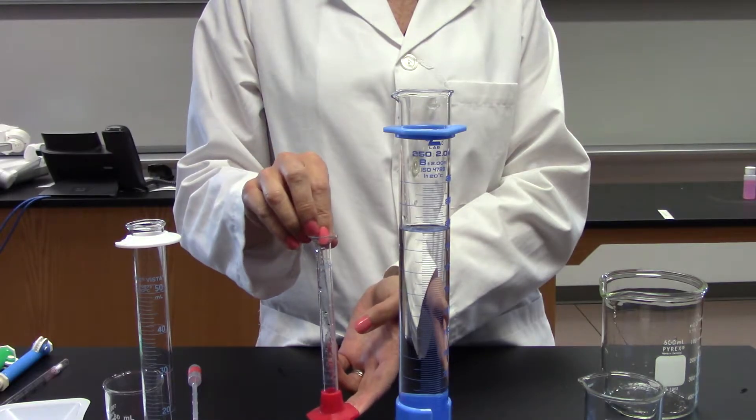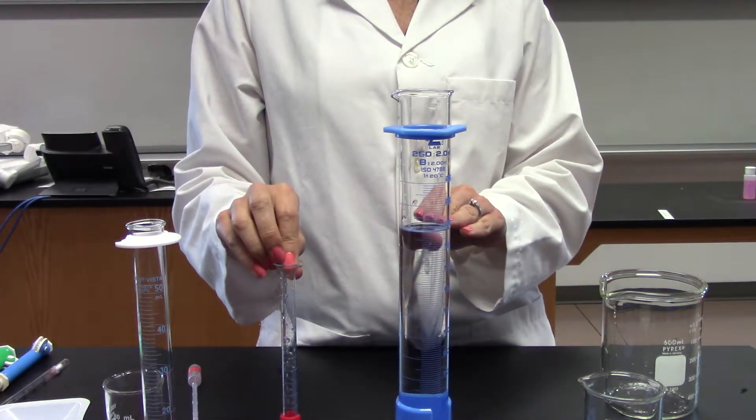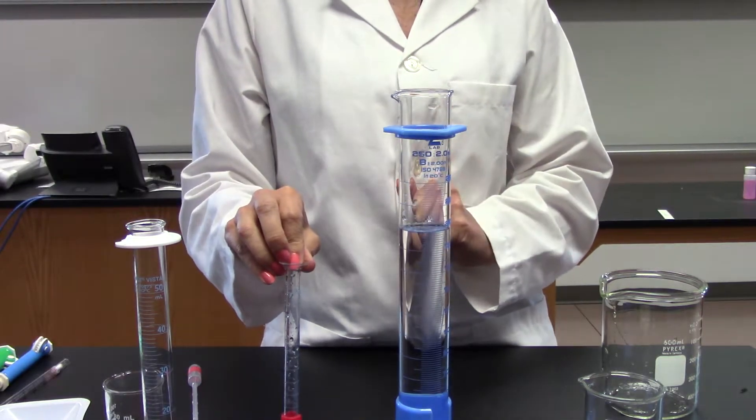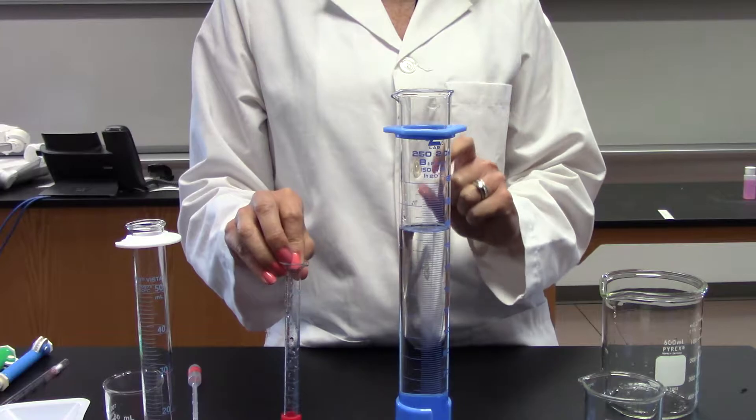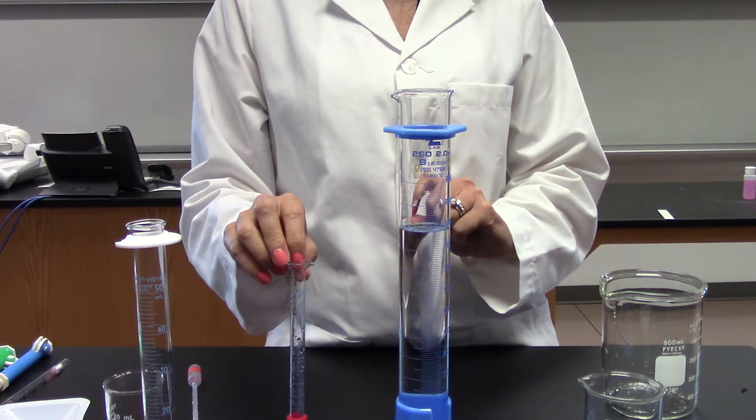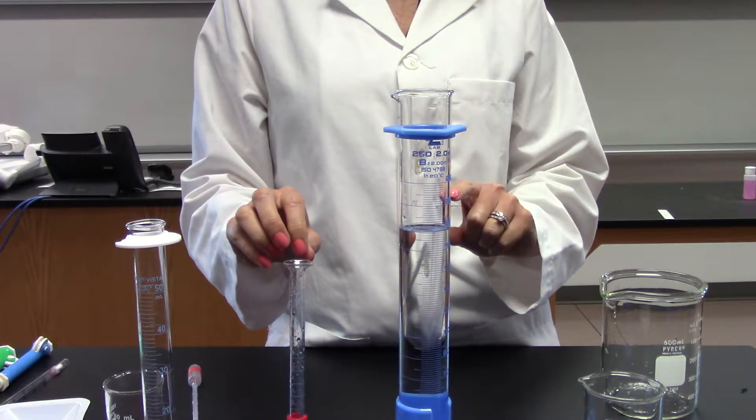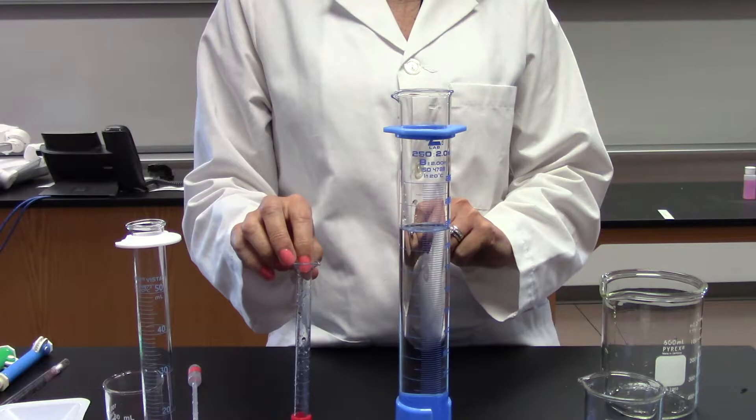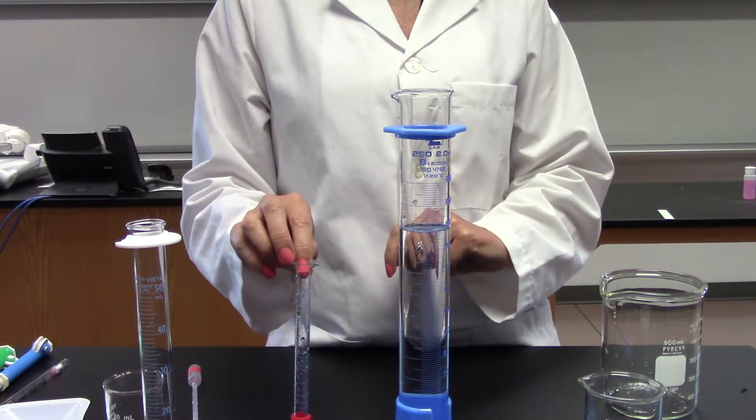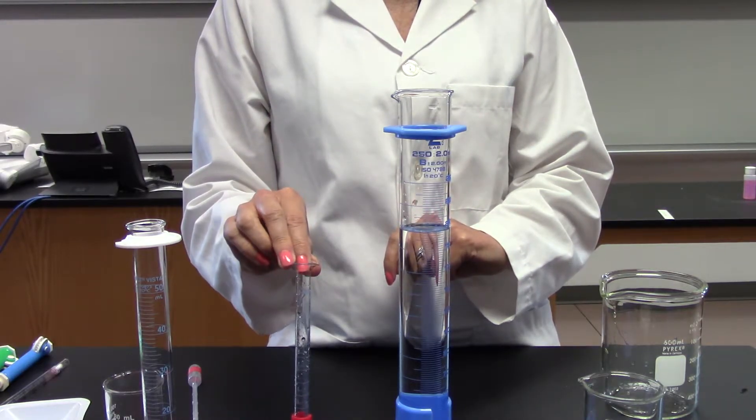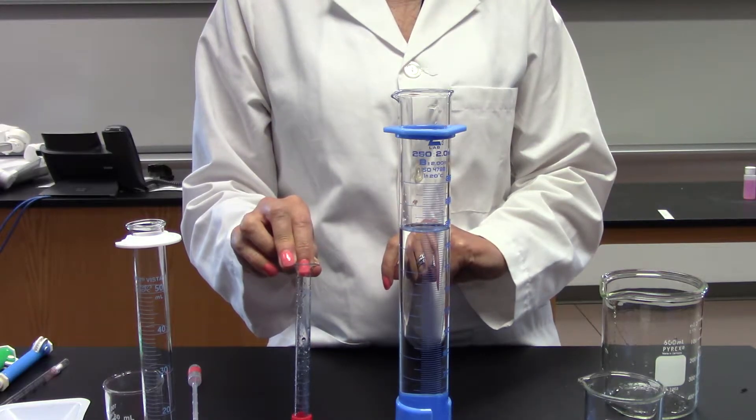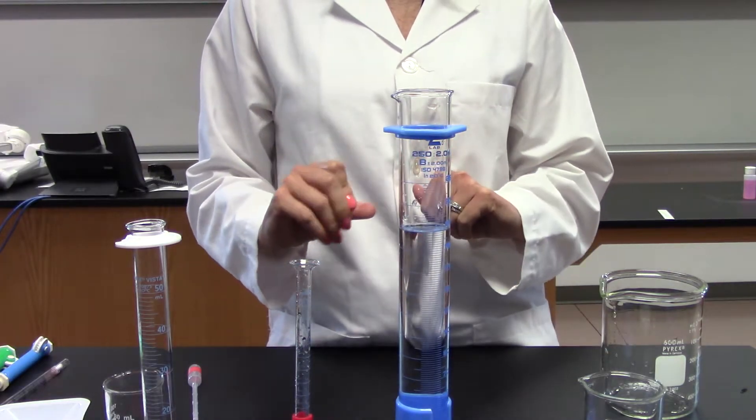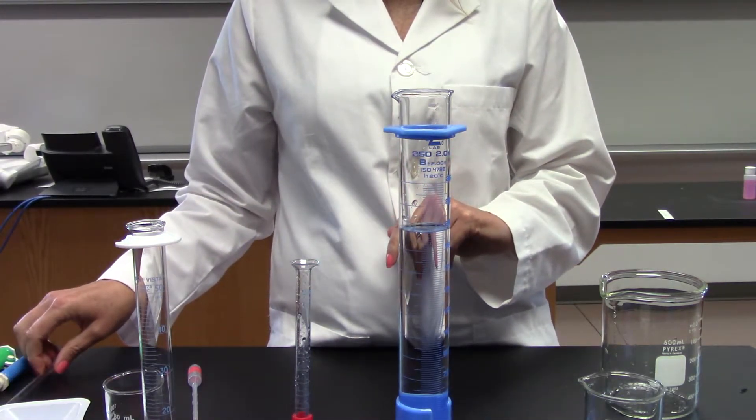So let's talk about what the meniscus is. When the liquid, in this case water, touches the glass, the surface tension between that glass and the water causes a curve in the surface of the water. In the case of water, it's what we call a concave meniscus. We measure the liquid volume from the bottom of the meniscus, meaning the bottom of that curve.